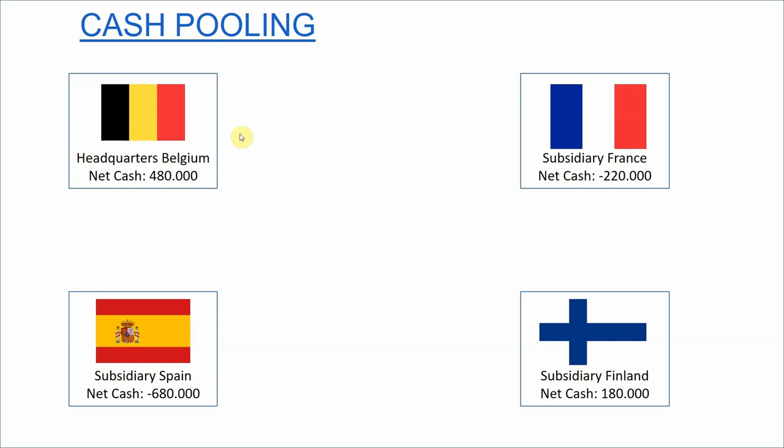While the netting system focuses on minimizing transaction costs, cash pooling focuses more on the cash position of companies, and more specifically on the cost of overdrafts. For example, we have a European group with headquarters in Belgium and subsidiaries in France, Finland, and Spain. These countries were not chosen by accident — cash pooling is especially interesting when transaction costs are already limited. All these countries use the euro and are part of the Single European Payment Area, so transaction costs are already very limited.